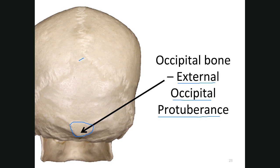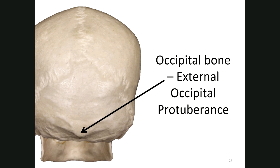A ligament called the ligamentum nuchae attaches onto this portion of the occipital bone. Depending on people's activities when they were younger, if those tissues tug on that area it can stimulate bone growth. When a bone is getting stressed, it lays down more bone — we'll learn that principle in Chapter 7. Certain people's protuberance can get bigger — similar to Osgood-Schlatter's disease, where the quadriceps tendon keeps pulling on the tibial tuberosity and more bone grows.